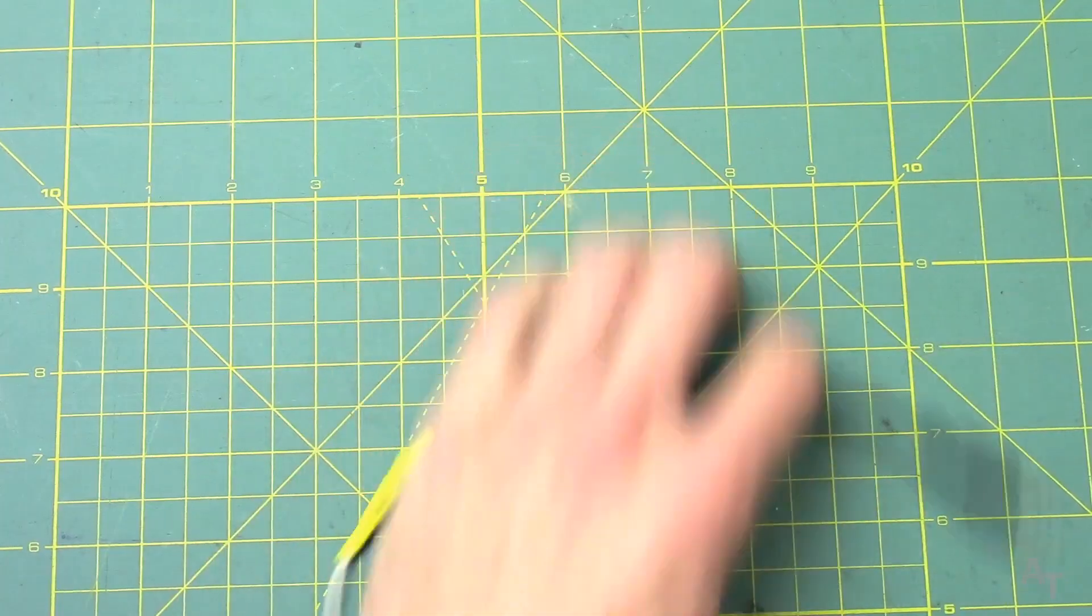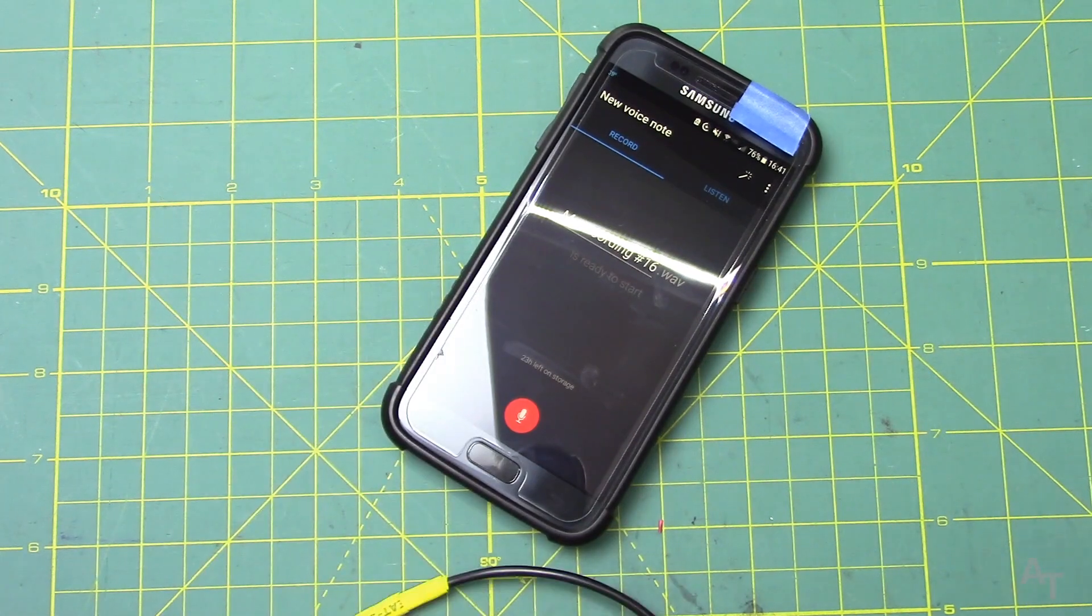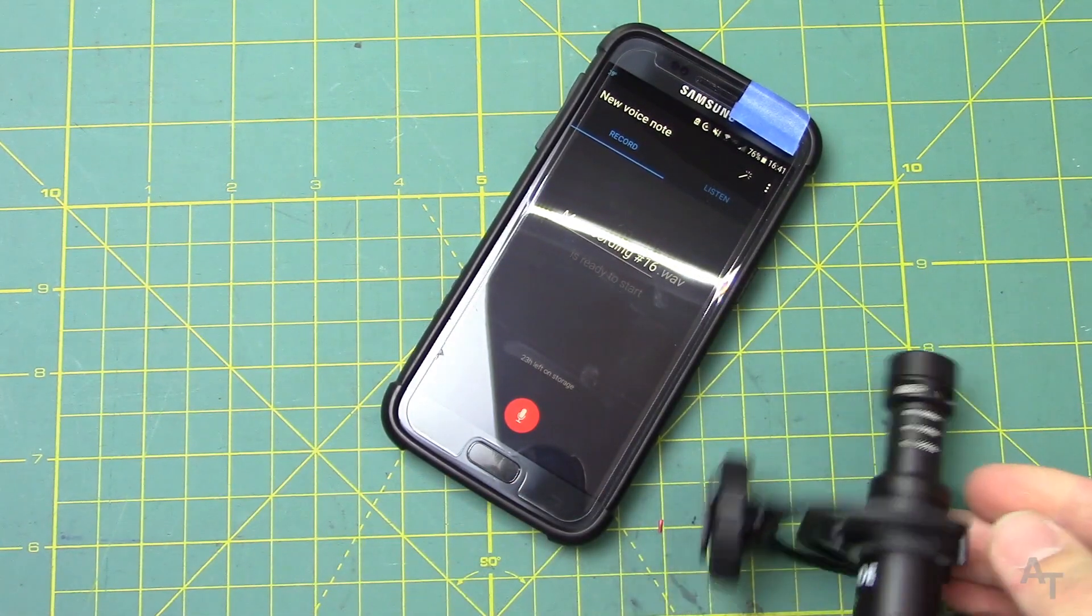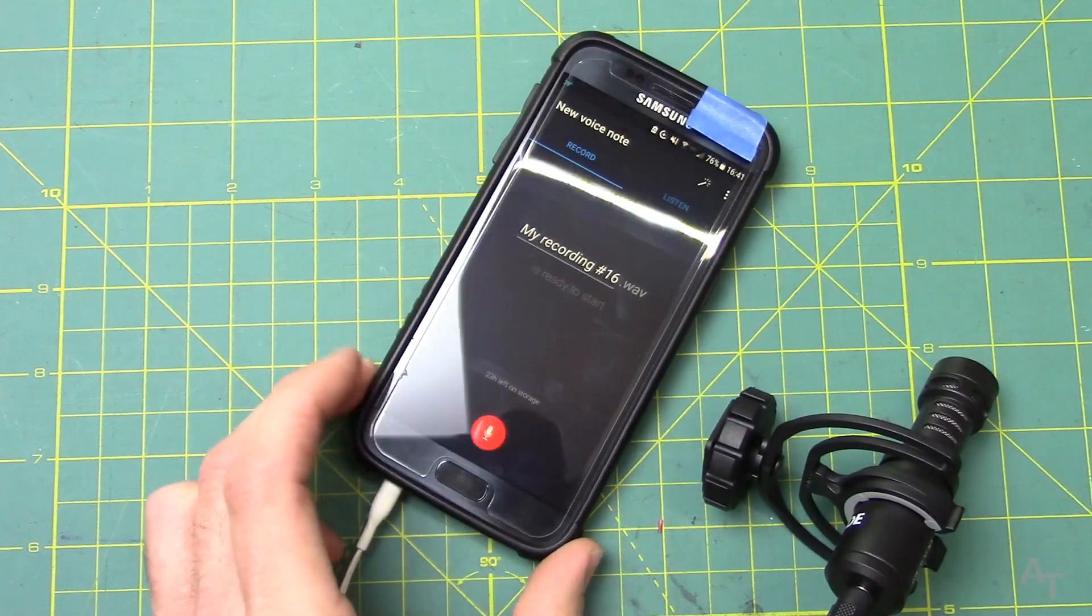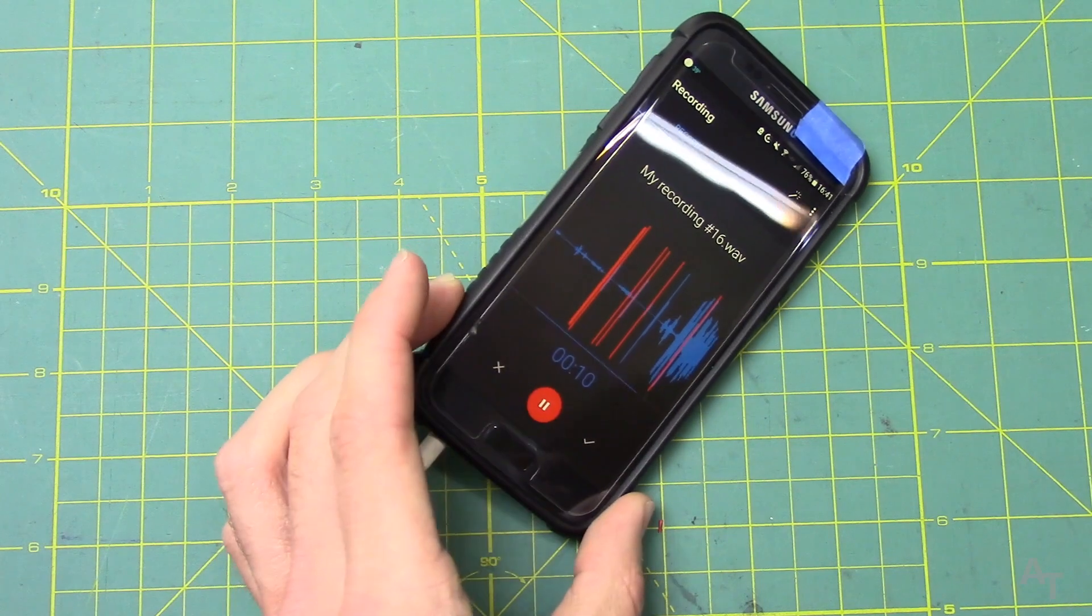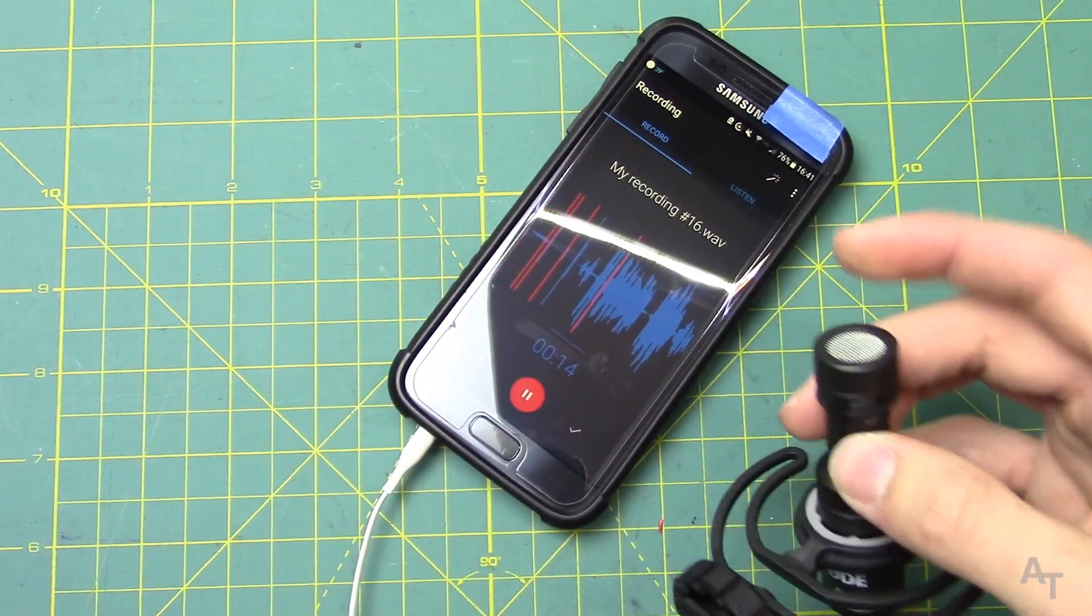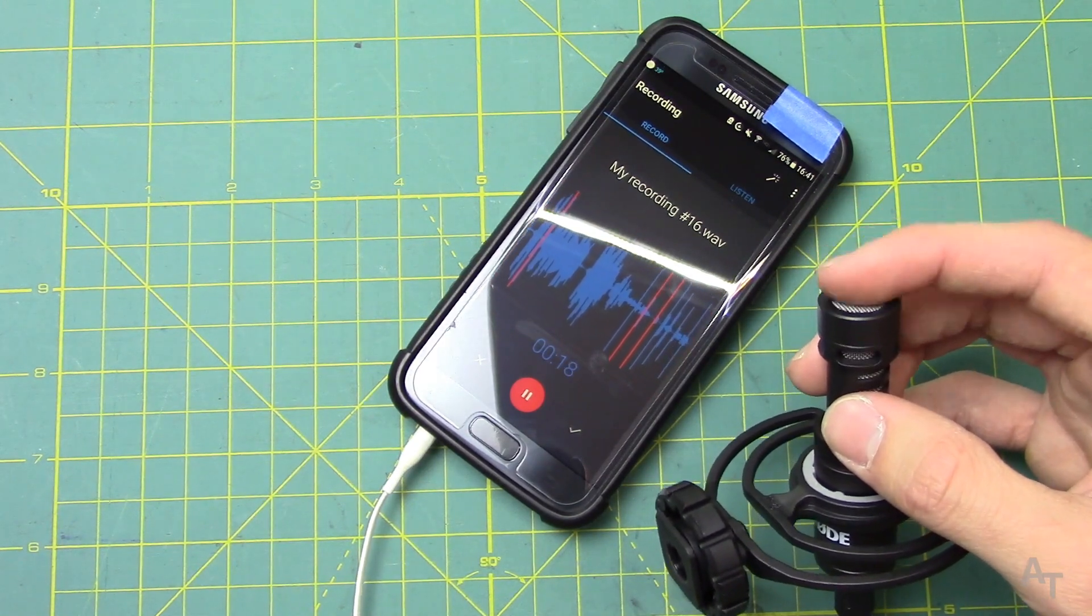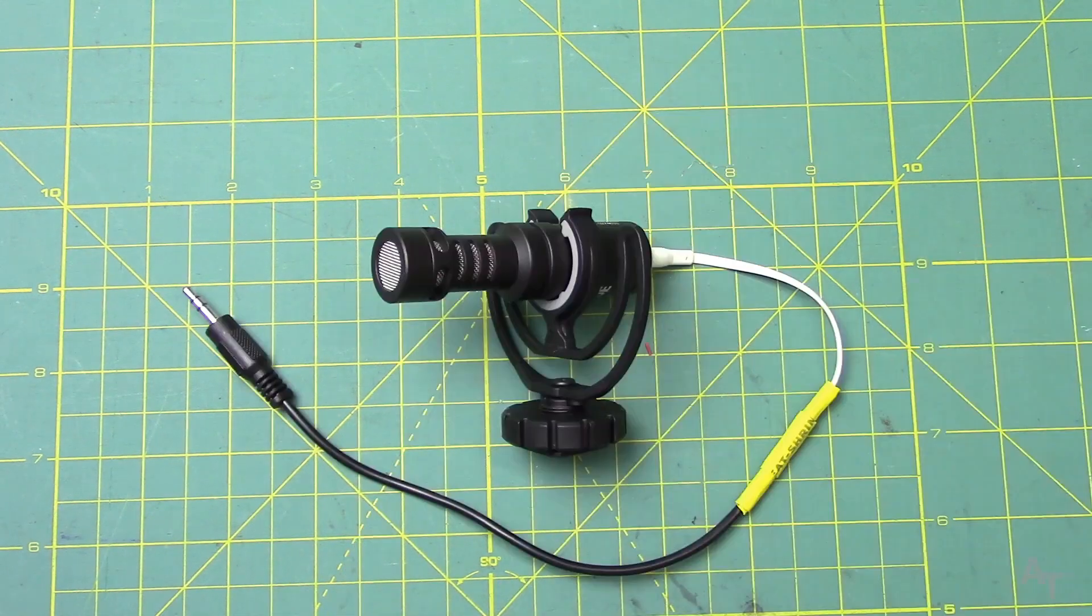So let's test it out. Here we have our voice recording app. We're gonna plug in this end into the microphone, plug in this end into the phone. Check, check, check. I'm talking into the VideoMicro and it is picking up. You can see when I'm tapping on there very gently it picks it up but not when I tap on the phone. So we know it's coming out of here.